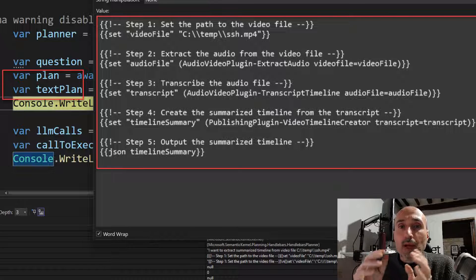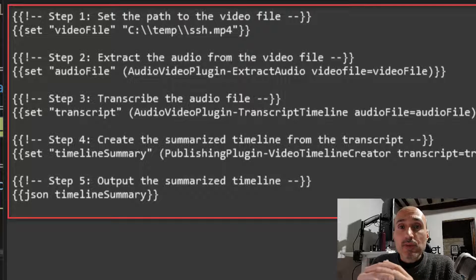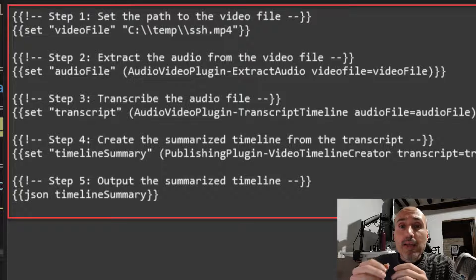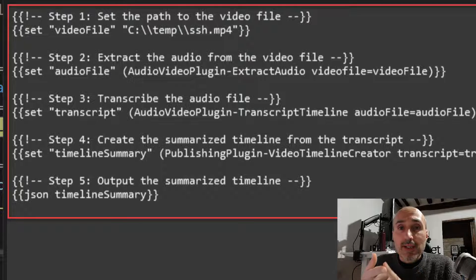So my question is, I want to have a summarized timeline of a video and it correctly determines that thanks to my available plugins, I need to call three plugins in sequence: extract audio, extract text from audio, and create a summary from the text extracted from the video.